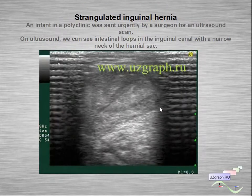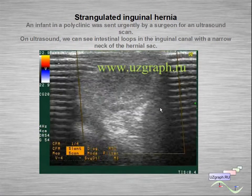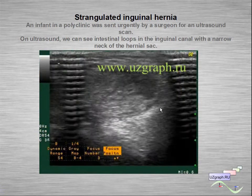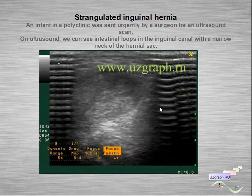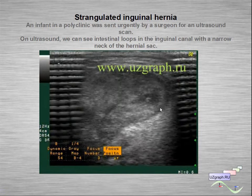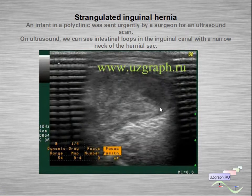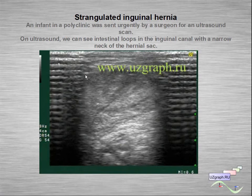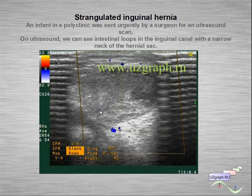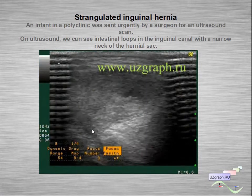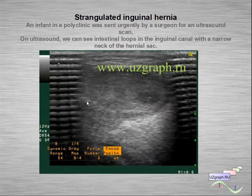Another case of strangulated inguinal hernia: an infant from a polyclinic was sent urgently by a surgeon for ultrasound. On ultrasound we can see intestinal loops in the inguinal canal with a narrow neck — you can see here the thin neck.